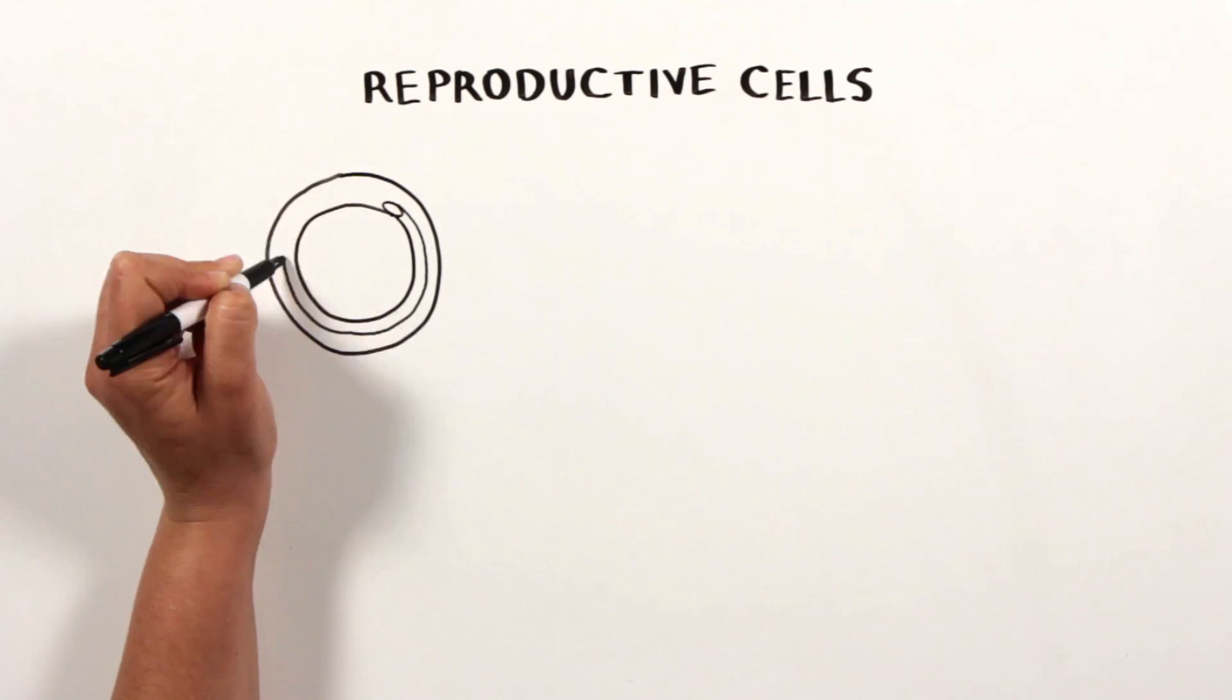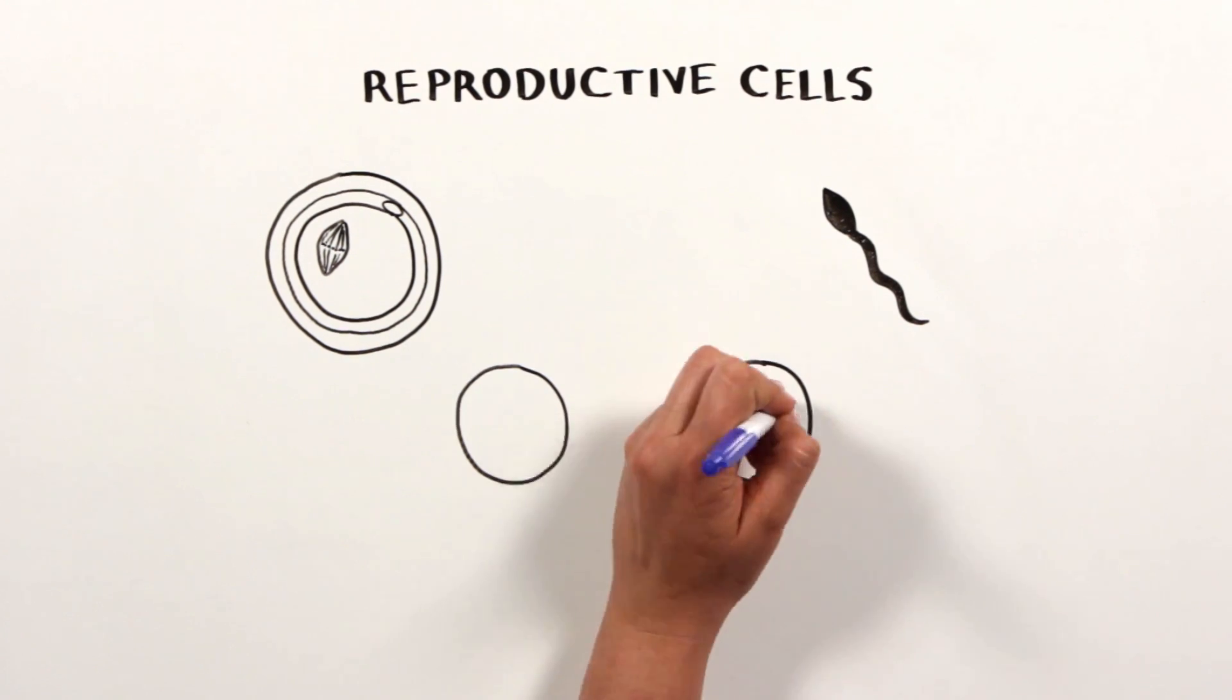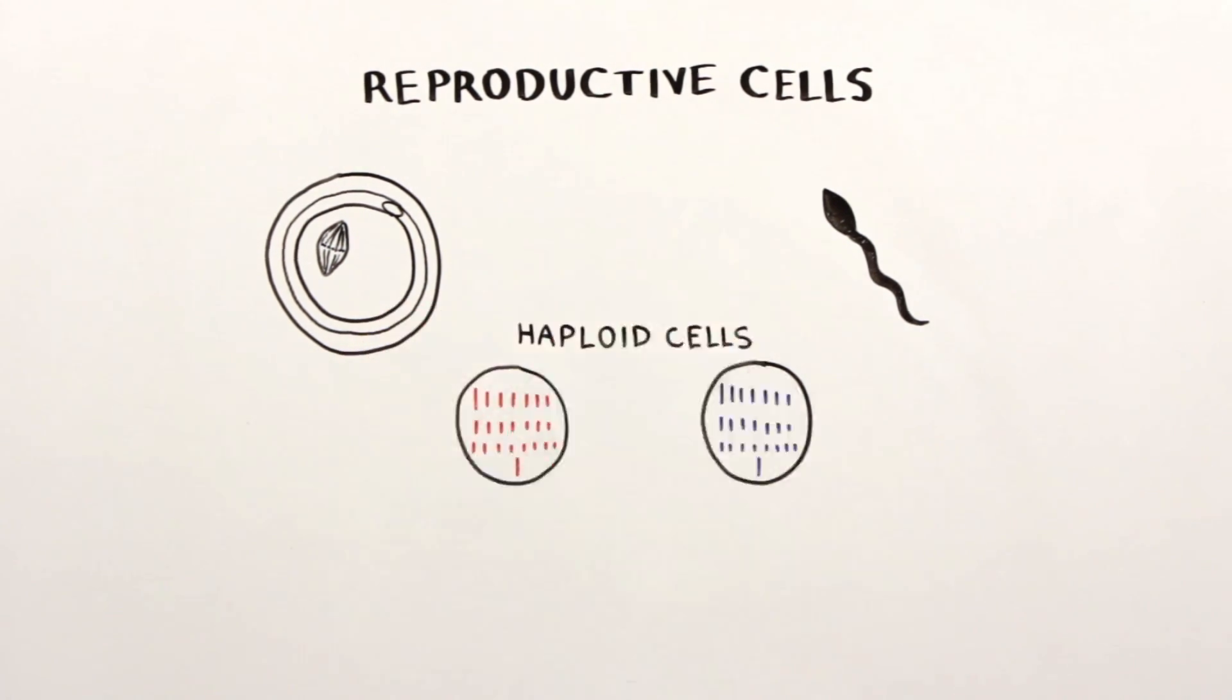Reproductive cells, the egg and the sperm, are the only exceptions that contain just one set of chromosomes and are called haploid cells.